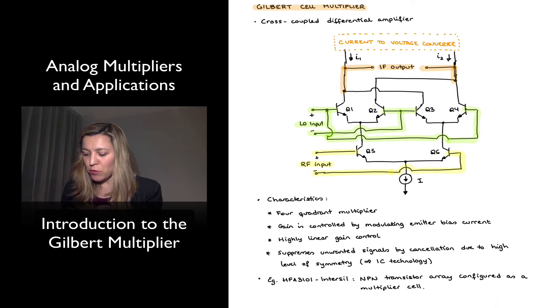And so the positive terminal of that input, or the positive side of the input, is being applied to the base of transistor Q1 and Q4. And the negative side of that input is being applied to transistors Q2 and Q3. And again, depending on the values, the value of that signal, all it is doing is steering the current through those different branches, through the four transistors.